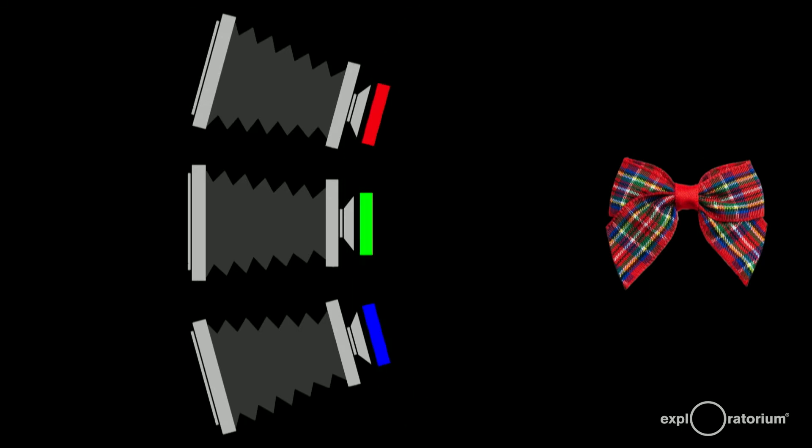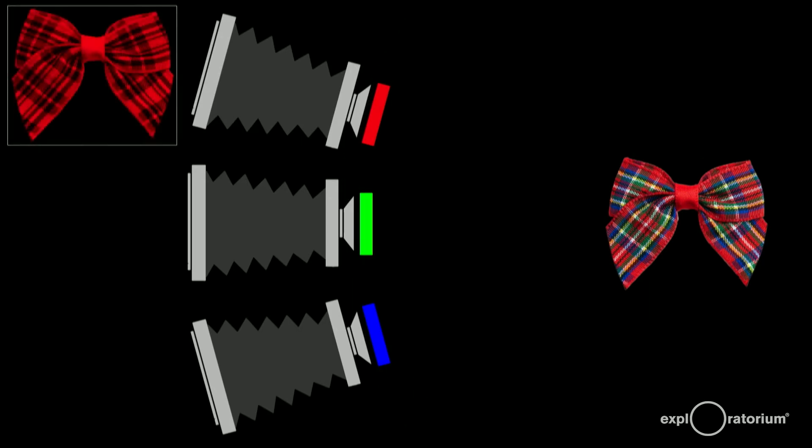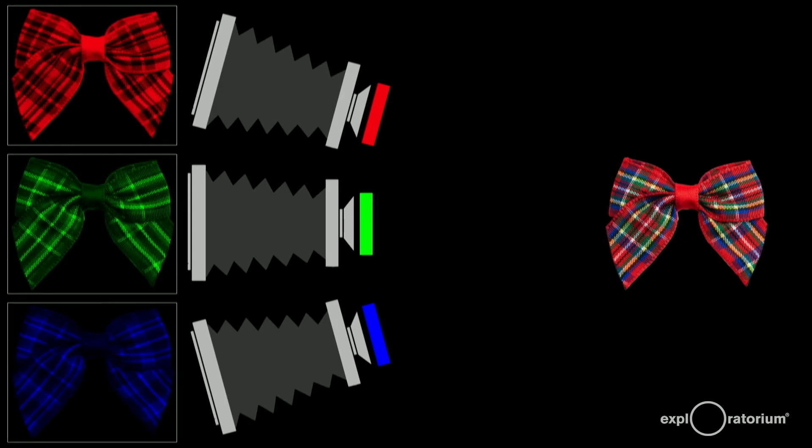The camera with the red filter only captured the red light from the ribbon. The camera with the green filter only captured the green parts of the ribbon, and the blue filtered camera only the blue parts of the ribbon. Note the differences in the photos.